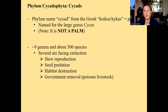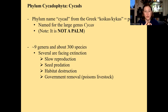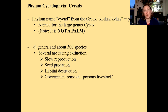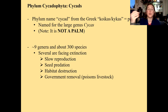There aren't that many species of cycads left — only about 300 of them. Many are facing extinction for different reasons, including slow reproduction. Their seeds are eaten and destroyed in the process, which is unusual. They're also losing their habitat, as the places where cycads like to grow are being built up or converted to agriculture. Sometimes governments remove cycads because if certain animals eat the leaves or parts of the plant, it can poison them.